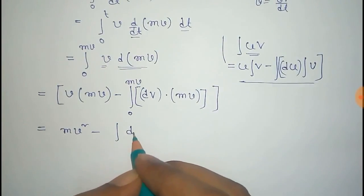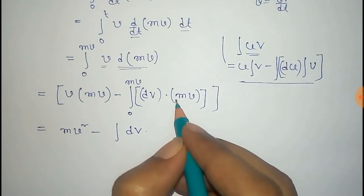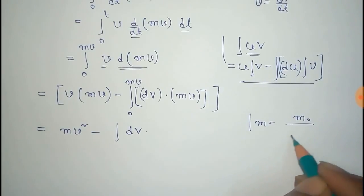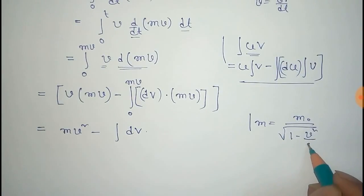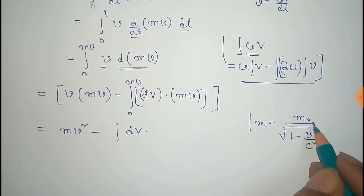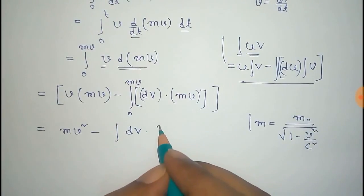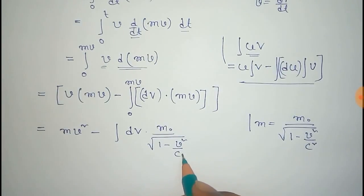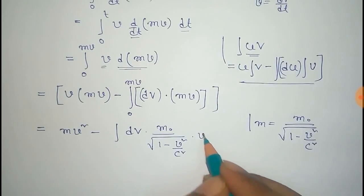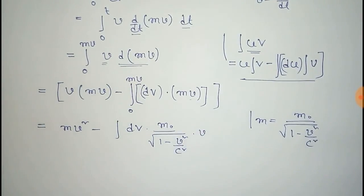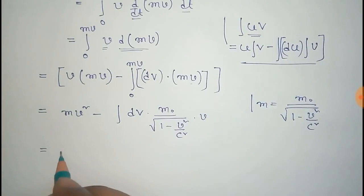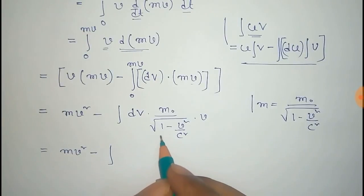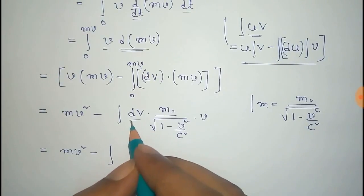Now M can be replaced as M₀ divided by the square root of (1 - v²/c²), where M₀ is the rest mass. So we replace M with M₀ over root (1 - v²/c²), giving MV squared minus the integral of M₀ over root(1 - v²/c²) times V dV.